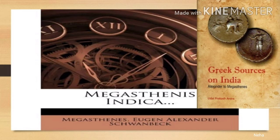The first one is Megasthenes' Indica. Megasthenes was in India as an ambassador of the Greeks in the court of Chandragupta Maurya. He recorded his experiences at Pataliputra, which was the capital of the Mauryan Empire, in his book named Indica.